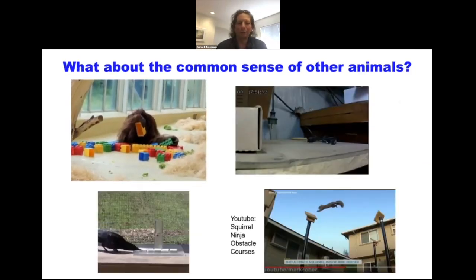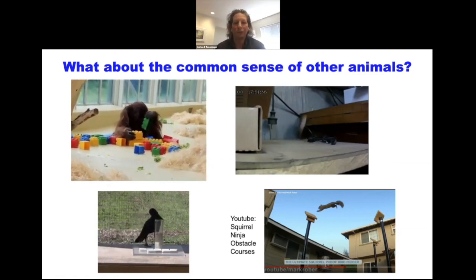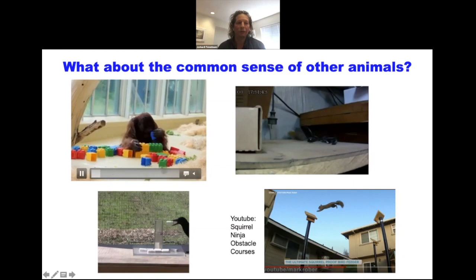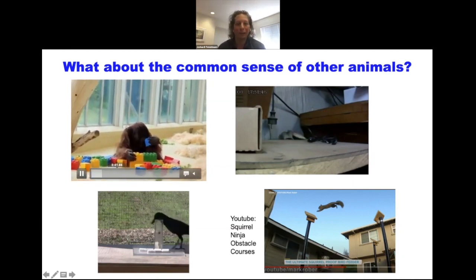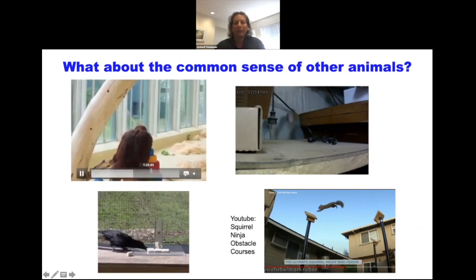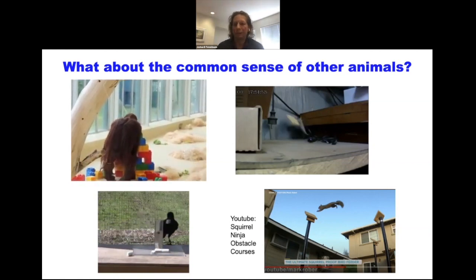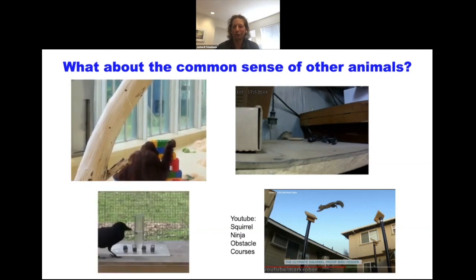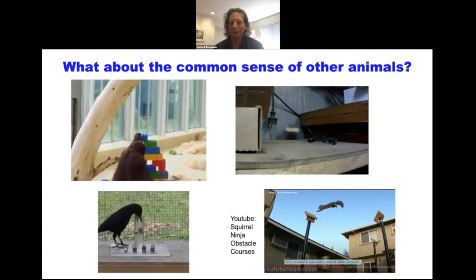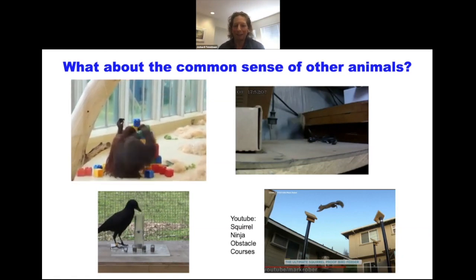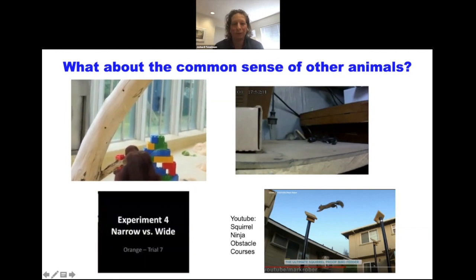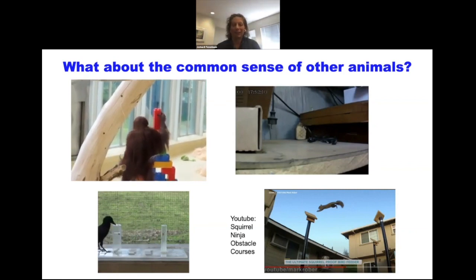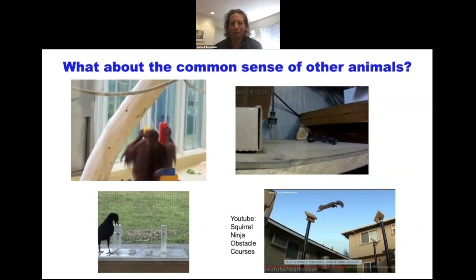The common sense we're talking about here — at the infant or young toddler stage — is not really distinctively human. A lot of it is shared with many other animals. Not only kids but orangutans can play with objects. Crows and other corvid species are incredibly good physical reasoners and tool users. You might also check out the squirrel ninja obstacle course on YouTube — it's a great way to spend 20 minutes — which builds on actual research done for some years.